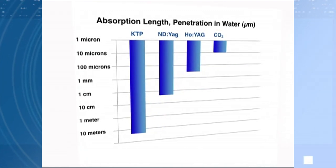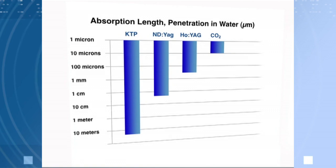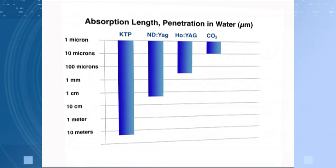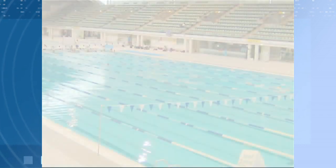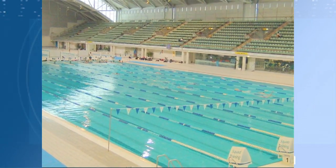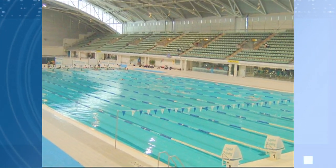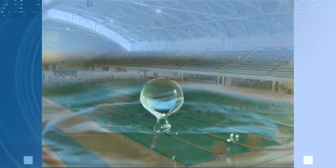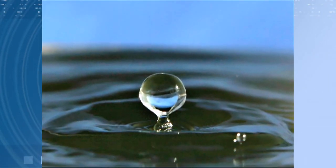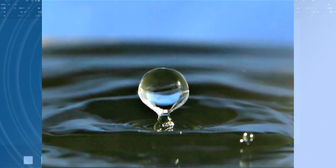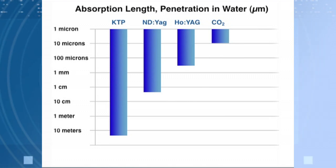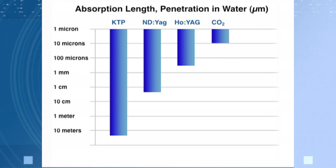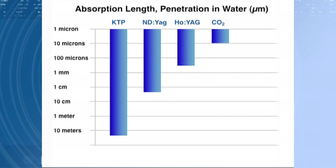This chart shows penetration depths of various medical lasers in water on a logarithmic scale. Each tick mark on the y-axis represents an order of magnitude greater penetration in water. For example, KTP laser energy can travel half the length of an Olympic swimming pool before being absorbed, while CO2 laser energy is absorbed within one-third of a raindrop, or one one-hundredth of a millimeter. Since water is the main component of living tissue, the high absorption of the CO2 laser in water translates to precise and superficial tissue interaction and minimal thermal collateral damage.